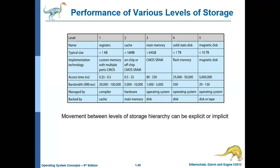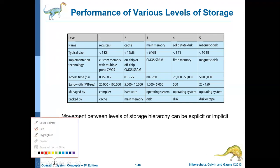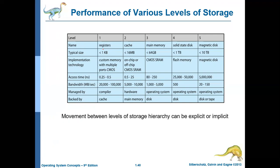Considering the memory hierarchy or storage hierarchy, there are different levels of storage. First we have registers, which are placed inside the CPU. Then we have cache memory — there are two types: internal cache (inside the processor) and external cache (outside the processor). Then we have main memory, solid state disks, magnetic disks, and tapes.